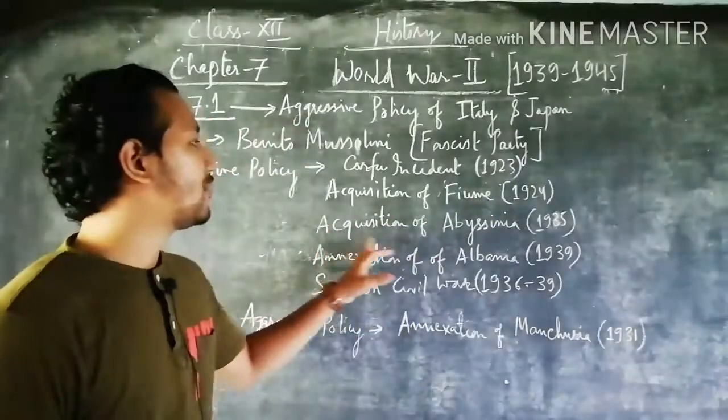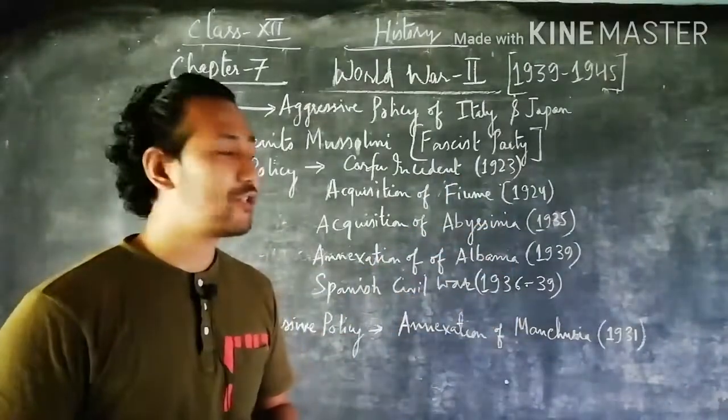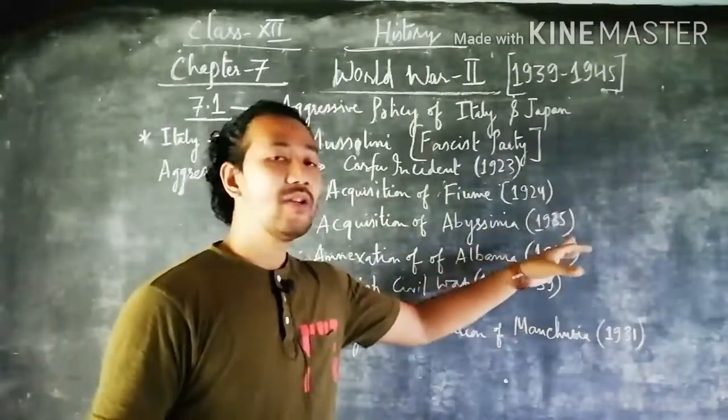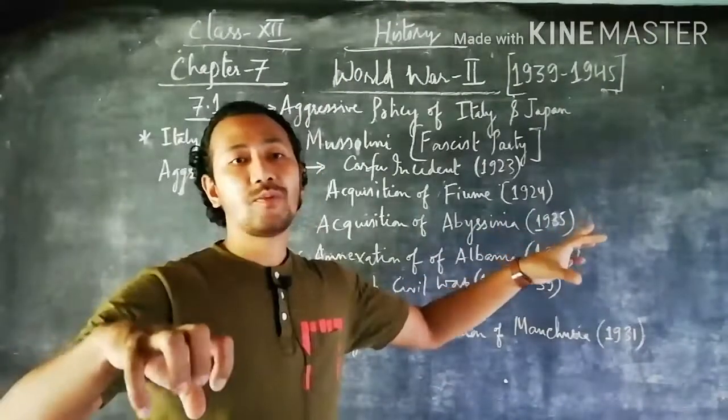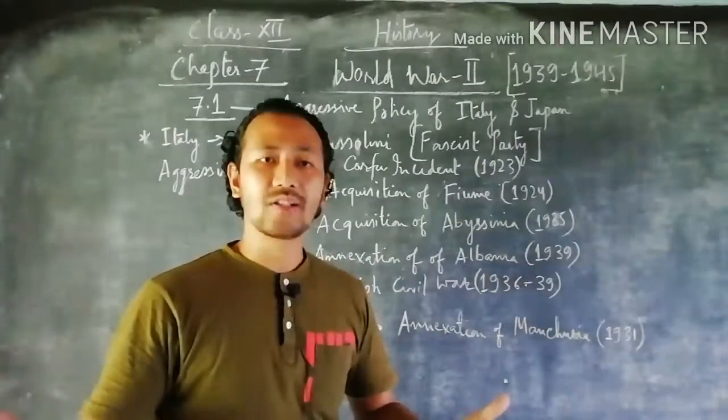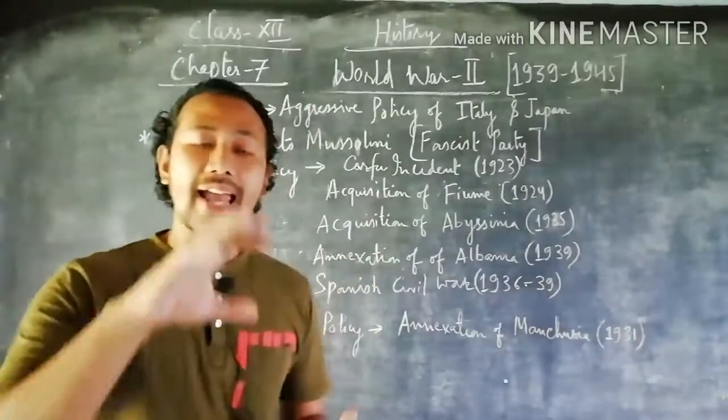Third, we talk about the acquisition of Abyssinia, which at present is also known as Ethiopia, an African nation, in 1935. Nations which were not so powerful but had lots of raw materials or parts which could attract Italy were annexed and captured.